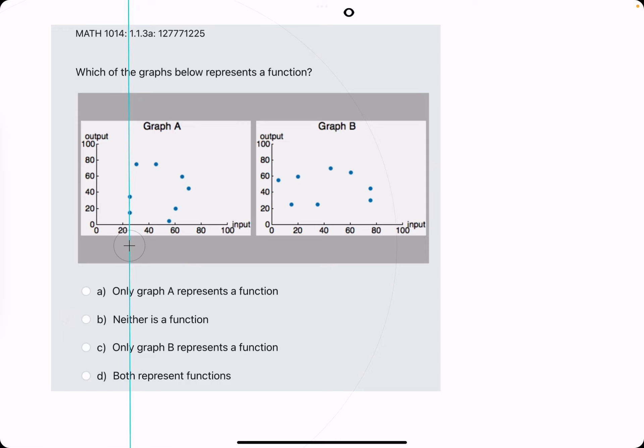As we scan through, we see that graph A has two points that lie on the same vertical line. What that means is the same input, the same x value, is producing two outputs. And that's what makes it not a function.